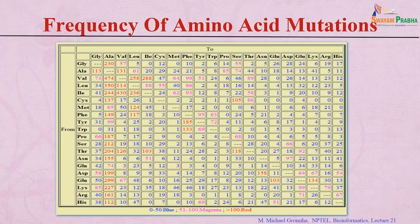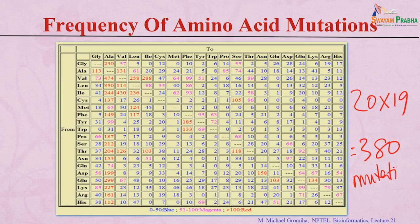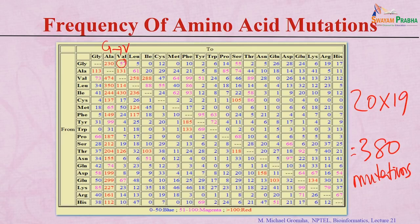Looking at mutation frequency — for example, alanine mutated to valine, or alanine to glycine — among 380 possible mutation types (20 × 19), some are widely studied while others are rarely studied or not studied at all. Mutations to alanine are most frequent, shown in red (more than 100 occurrences): valine to alanine, isoleucine to alanine, and methionine to alanine. This is because alanine scanning studies are commonly used.